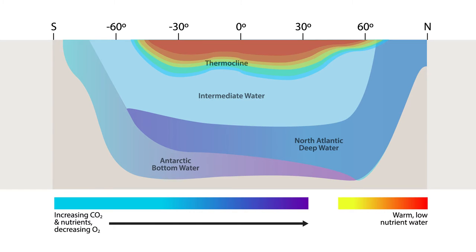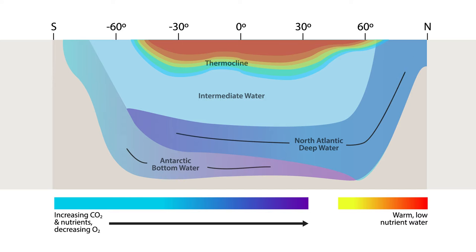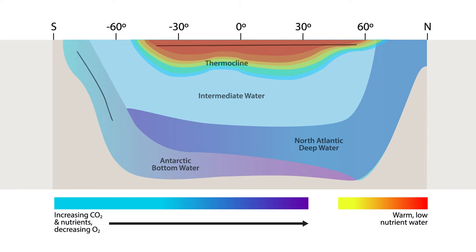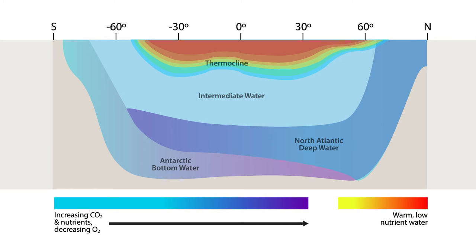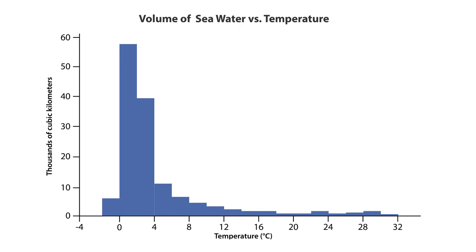The polar regions are special because these are the few regions where the ocean becomes so cold and dense that deep waters can form — North Atlantic deep water from the north and Antarctic bottom water from the south. If you look at the deep ocean temperatures and do a census, you find that most of the ocean volume is really cold: around 2 to 4 degrees Celsius, about 80% of the ocean volume is cold water.